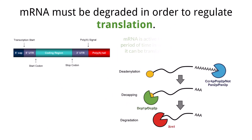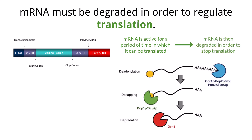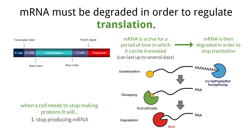mRNA can be active for minutes to days before breaking down. mRNA is degraded, which renders it useless and unable to participate in translation. Some mRNA molecules are very stable and can participate in translation for several days. When a cell needs to stop making a protein, not only does it need to stop making more mRNA, but it must also degrade the mRNA that is already present.